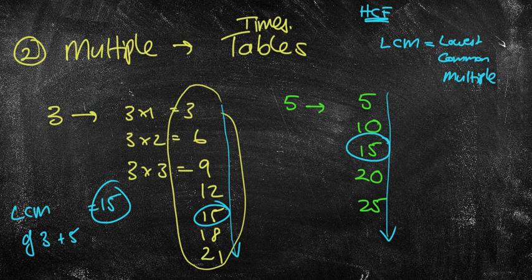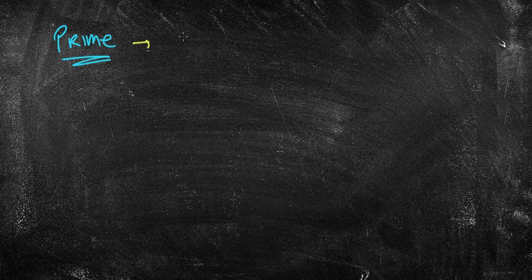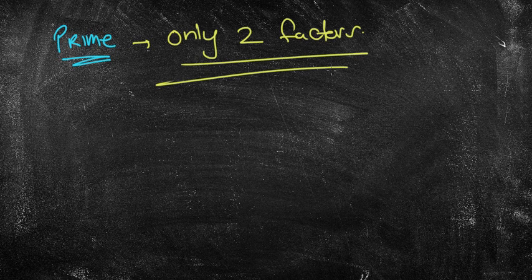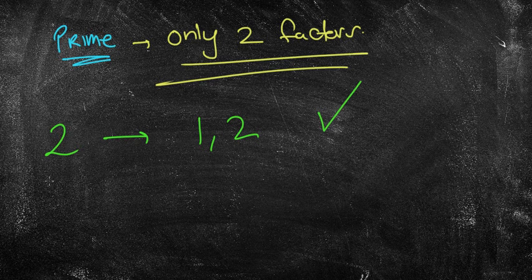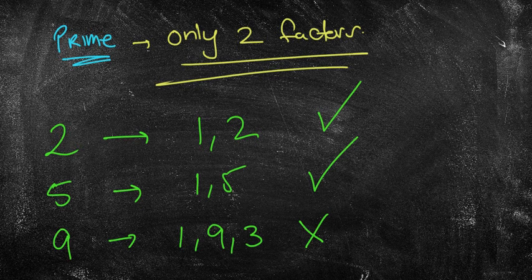Your factors are numbers that go into something and your multiples are your times tables. Let's now look at prime numbers. A prime number is anything that has only two factors, hence why we do factors first. What is a number that only has two factors? For example, 2. The factors of 2 are 1 and 2, therefore 2 is a prime number. What about 5? It has 1 and 5, that's also prime. What about 9? It has 1 and 9, but it also has 3, so that's not prime.